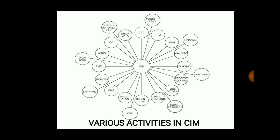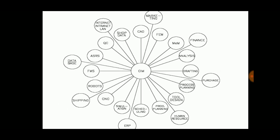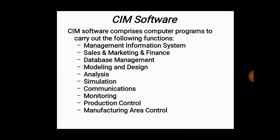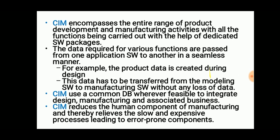The various activities of CIM include flexible manufacturing systems, database, shipping, CNC, simulation, purchasing, drafting, analysis, final terminal analysis, CAD, finance, and more. CIM software includes management information systems, sales and marketing, finance, database management, modeling and design, analysis, simulation, communications, monitoring, production control, and manufacturing area control. CIM encompasses the entire range of product development and manufacturing activities, all carried out with the help of software packages.